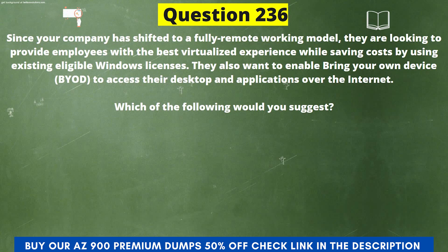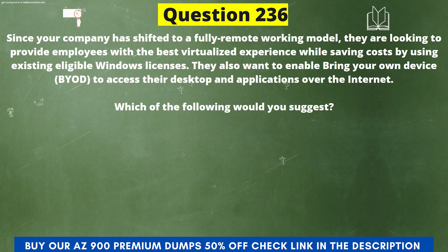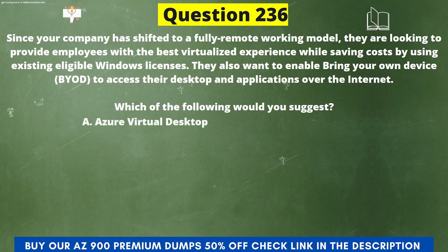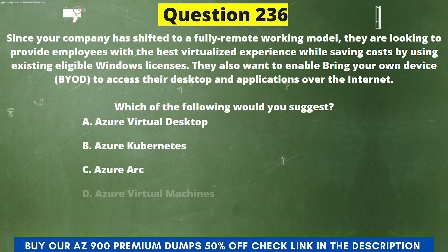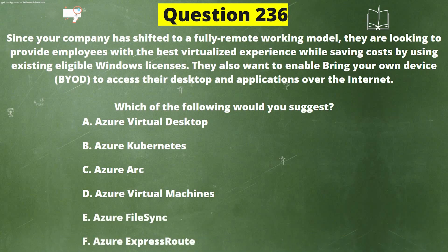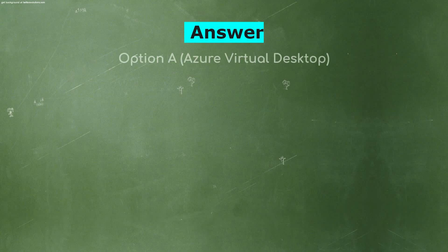Next question: Your company has shifted to a fully remote working model. They are looking to provide employees with the best virtualized experience while saving cost by using existing eligible Windows licenses, and want to enable bring-your-own-device access to desktops and applications over the internet. Which of the following would you suggest? Options: A) Azure Virtual Desktop, B) Azure Kubernetes, C) Azure Arc, D) Azure Virtual Machines, E) Azure File Sync, F) Azure ExpressRoute. The correct answer is option A, Azure Virtual Desktop.